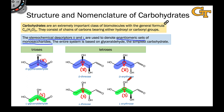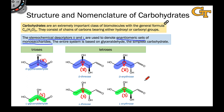D and L-sugars are enantiomeric. Notice that erythrose really means a trans or anti-relationship between the hydroxyls when the backbone is drawn this way. D and L-erythrose are enantiomers — they differ in configuration not only at this stereocenter but at their other stereocenter also.